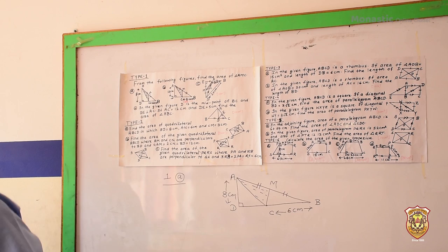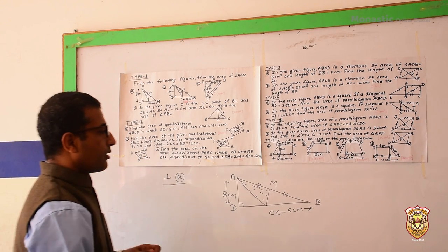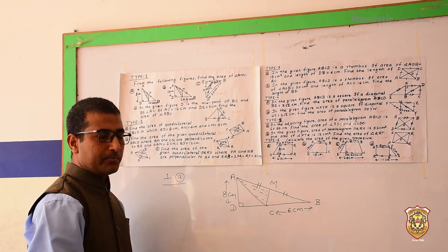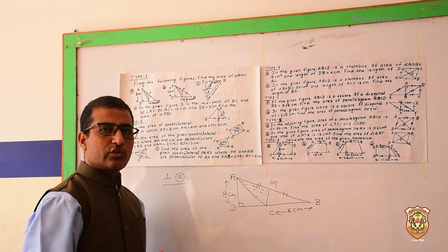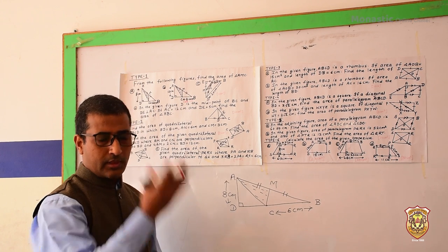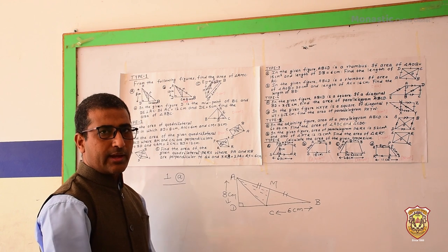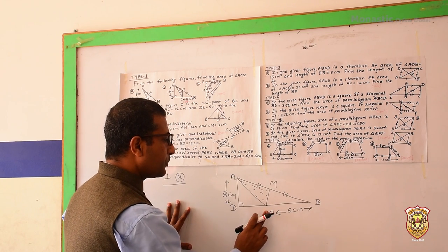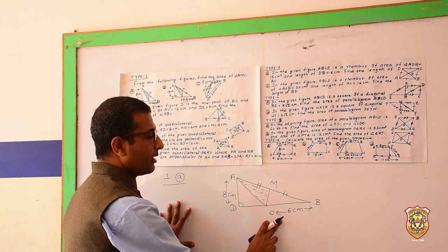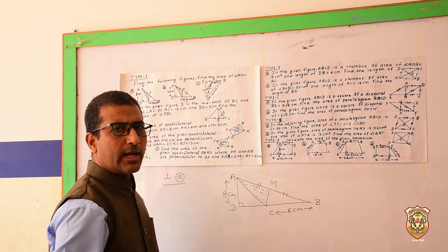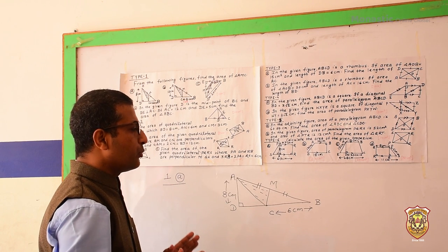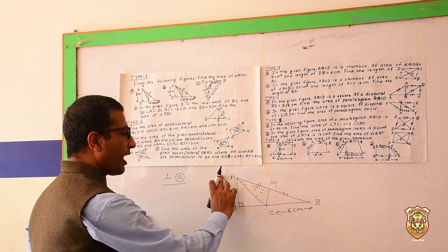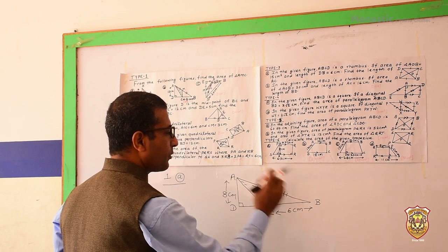Now, what we have to do here. First, we have to know which type of triangle ABD is. You have learned that on the basis of angle there are three types of triangles: acute angle triangle, right angle triangle, and obtuse angle triangle. Here, triangle ABC is an obtuse angle triangle. You know that area of a triangle is ½ × base × height. Here, the base is 6 cm and height is 8 cm, so we can find the area of triangle ABC.